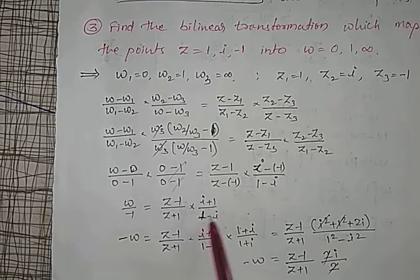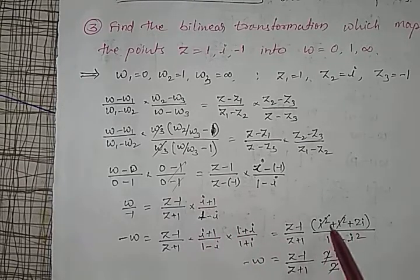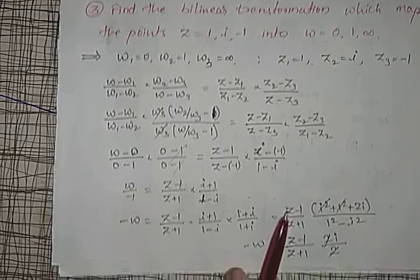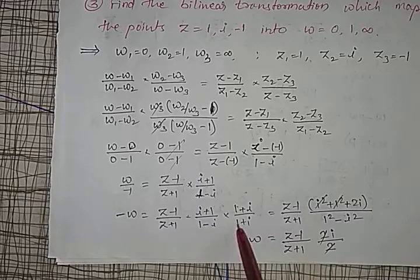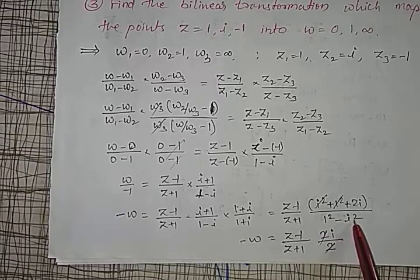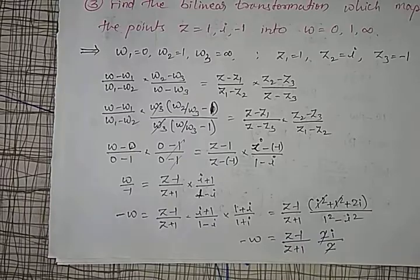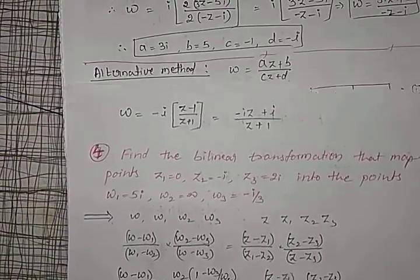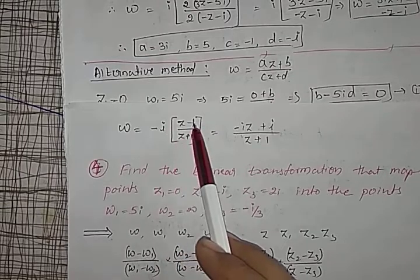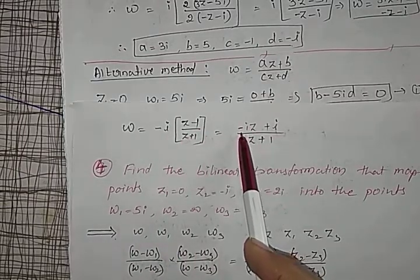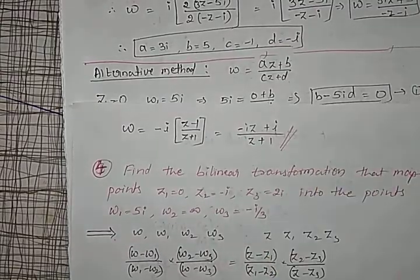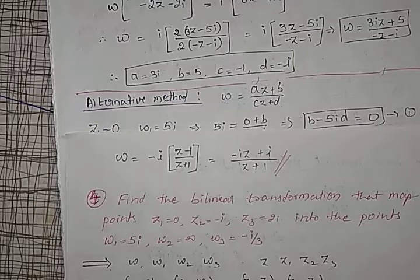Multiplying by the conjugate (1 + i)/(1 + i): (1 + i)^2 = 1 + 2i + i^2 = 2i, and the denominator (1 minus i)(1 + i) = 1 minus i^2 = 2. So the factor becomes 2i/2 = i. Therefore omega = (z minus 1)/(z + 1) times i, giving the required conformal transformation: omega = i(z minus 1)/(z + 1). Thank you, students. Some more examples I will solve and I will give an assignment for you.